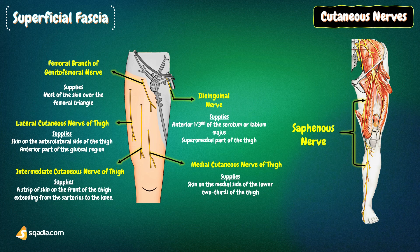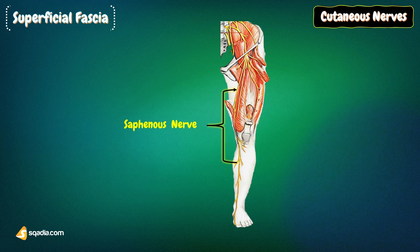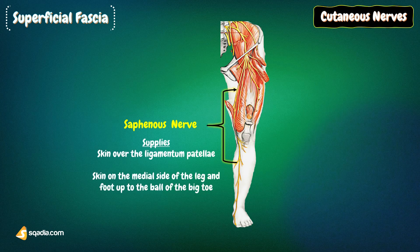The saphenous nerve is a branch of the posterior division of the femoral nerve. It pierces the deep fascia on the medial side of the knee, runs down in front of the great saphenous vein, and supplies the skin on the medial side of the leg and foot up to the ball of the big toe. Before piercing the deep fascia, the saphenous nerve gives off the infrapatellar branch, which runs downwards and laterally and supplies the skin over the ligamentum patellae.